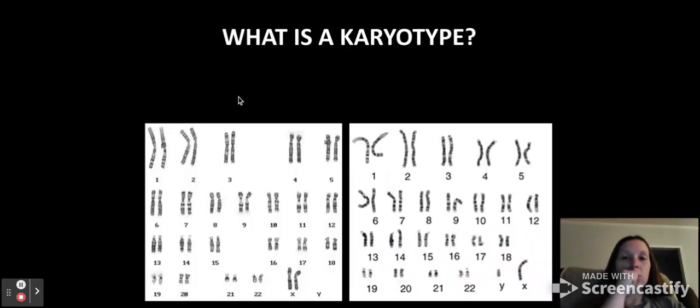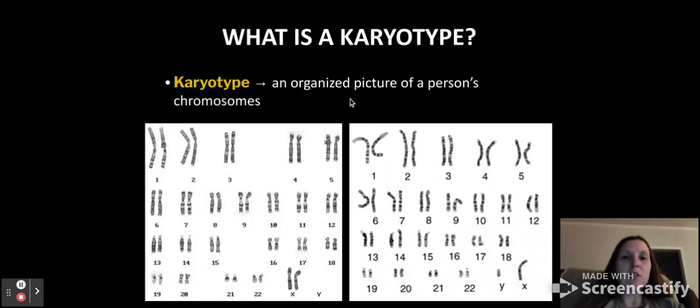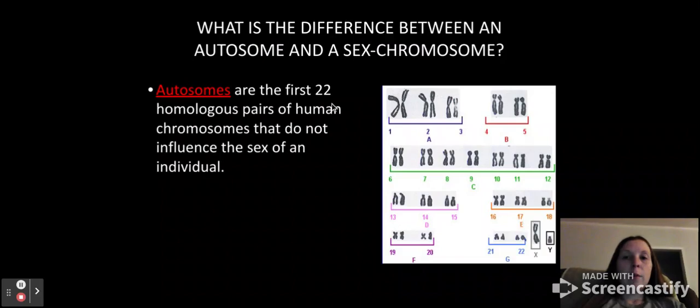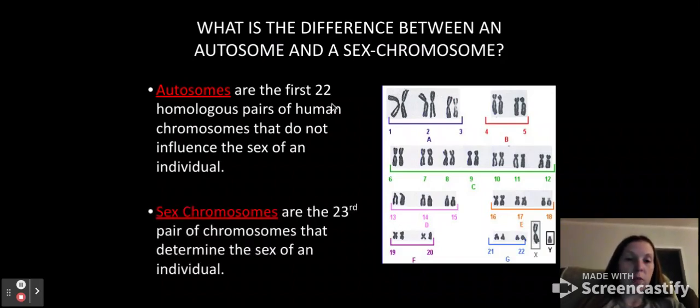Now let's talk about karyotypes. We've seen these before in the past, but we're going to talk about how you kind of label these a little bit. So this is an organized picture of a person's chromosomes. Remember to look down here at the 23rd chromosome to determine the gender. So this one has two X's. What would that be? This one has an X and a Y. What would that be? Remember that the autosomes are the first 22 pairs, and then the sex chromosomes are the 23rd pair, which should not look anything alike. They will be labeled XX or XY.